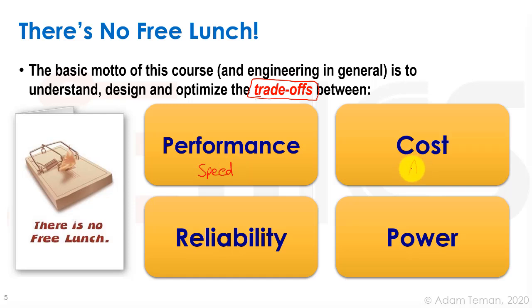Cost is synonymous in a lot of ways in this field with area. Silicon real estate is the most expensive real estate in the world. Making these chips is really, really expensive, so the actual area of each component in the chip costs a lot of money. That's why we want to make our gates, circuits, and components smaller and smaller. The smaller the area, the less our total cost. We're going to learn different models of how to define cost in this course.